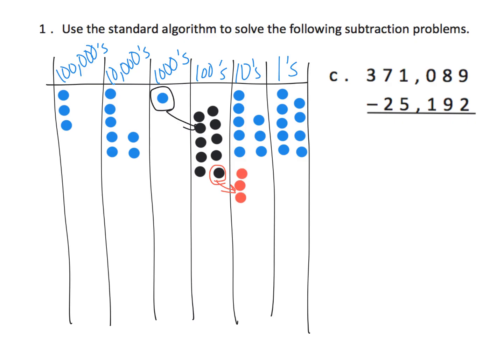I cash one hundred in for ten tens — one through ten. So now, instead of having one in the thousands place, I have none in the thousands place. Instead of having none in the hundreds place, I now have nine in the hundreds place. And instead of having eight in the tens place, I now have eighteen.